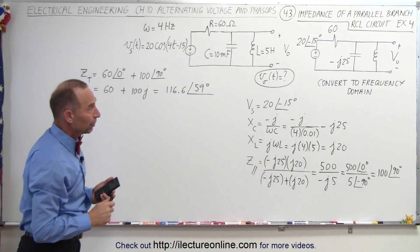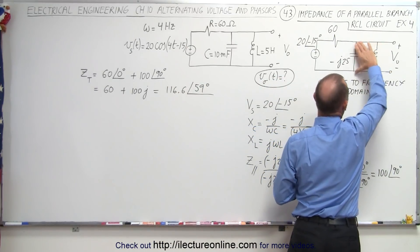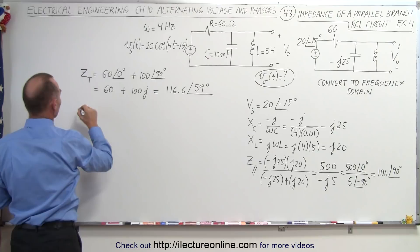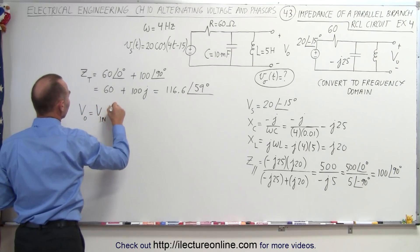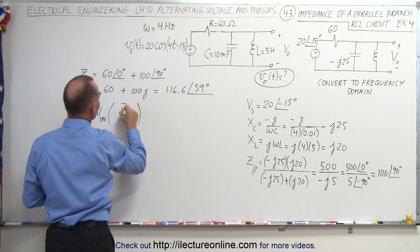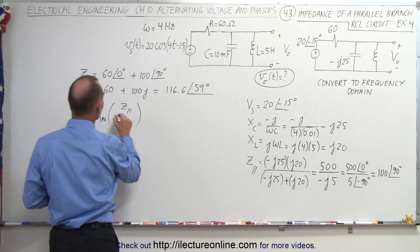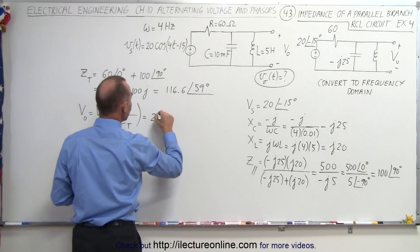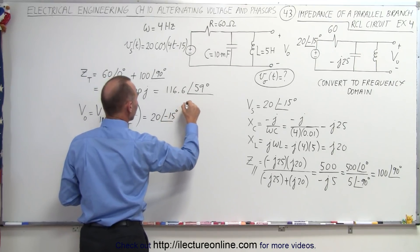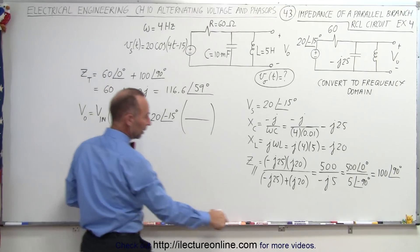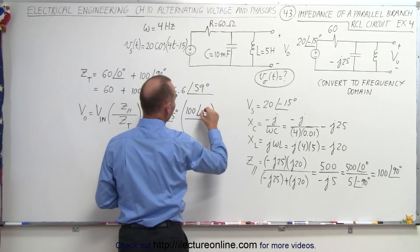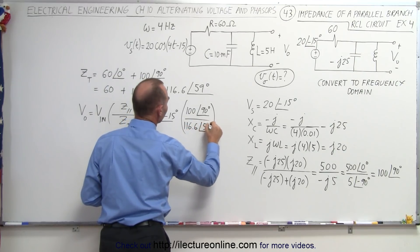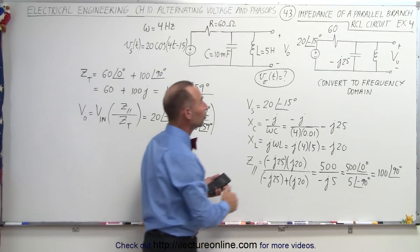Now we need to find the output voltage using a voltage divider — it's the voltage across the two parallel components as a fraction of the total voltage. The output voltage equals the input voltage times the ratio of the parallel impedance divided by the total impedance Z_total. We have the input voltage of 20 at a phase angle of minus 15 degrees, multiplied by Z_parallel of 100 at 90 degrees, divided by Z_total of 116.6 at 59 degrees.